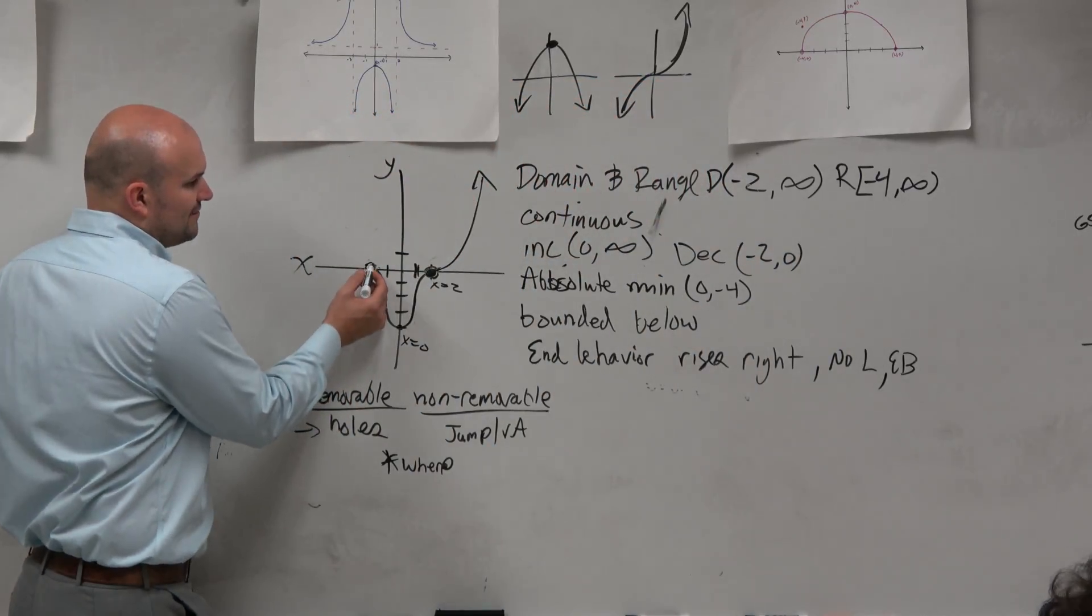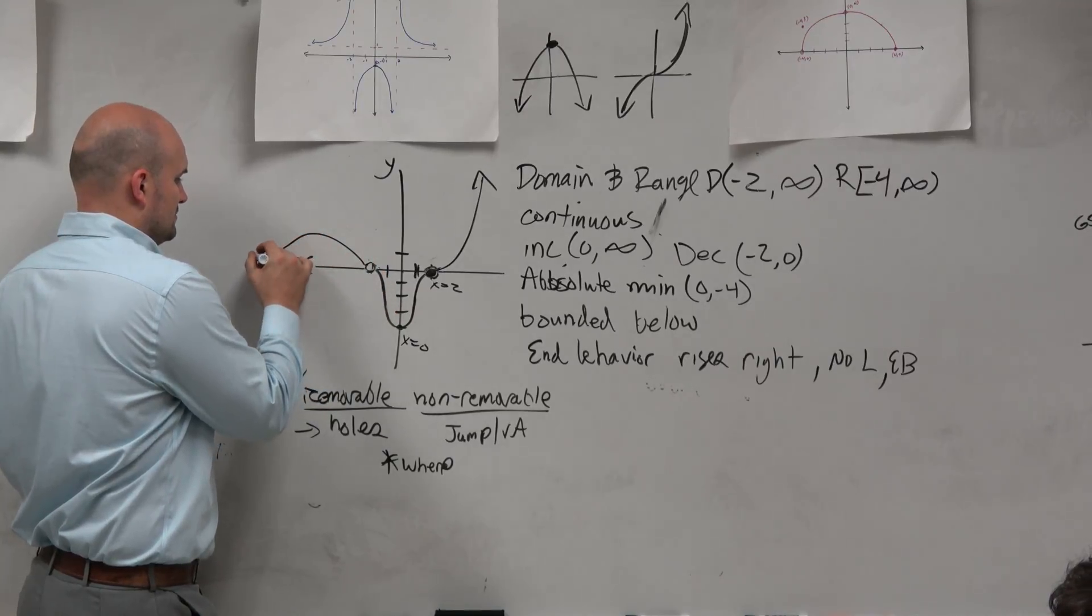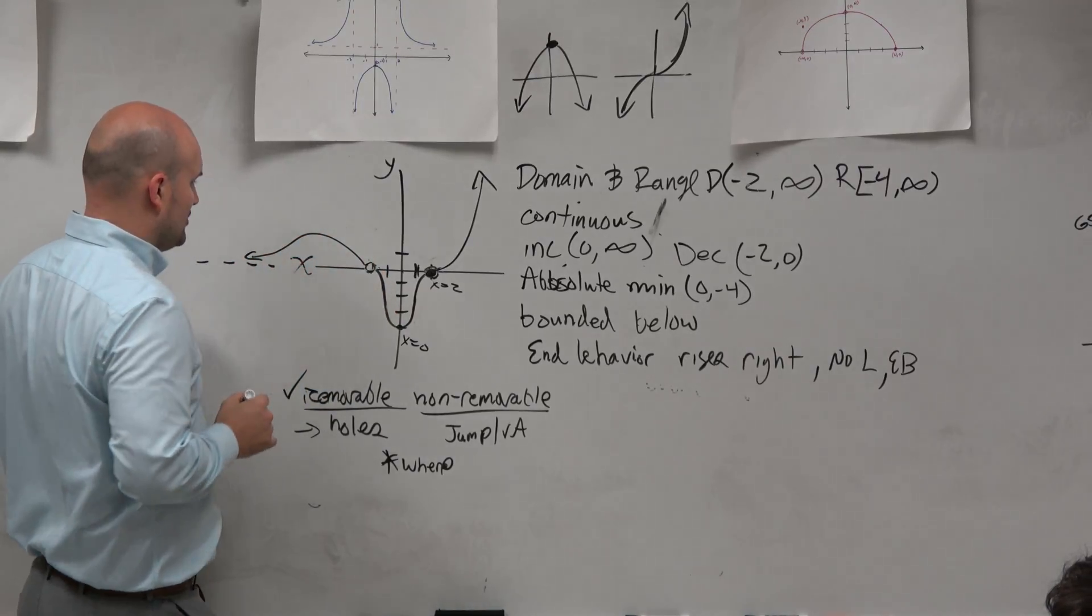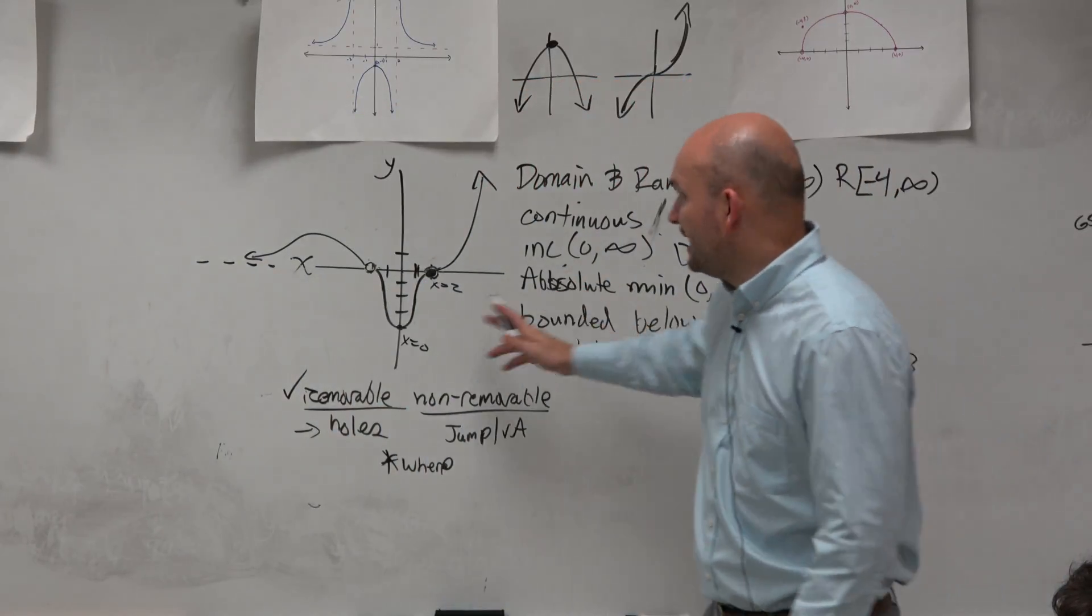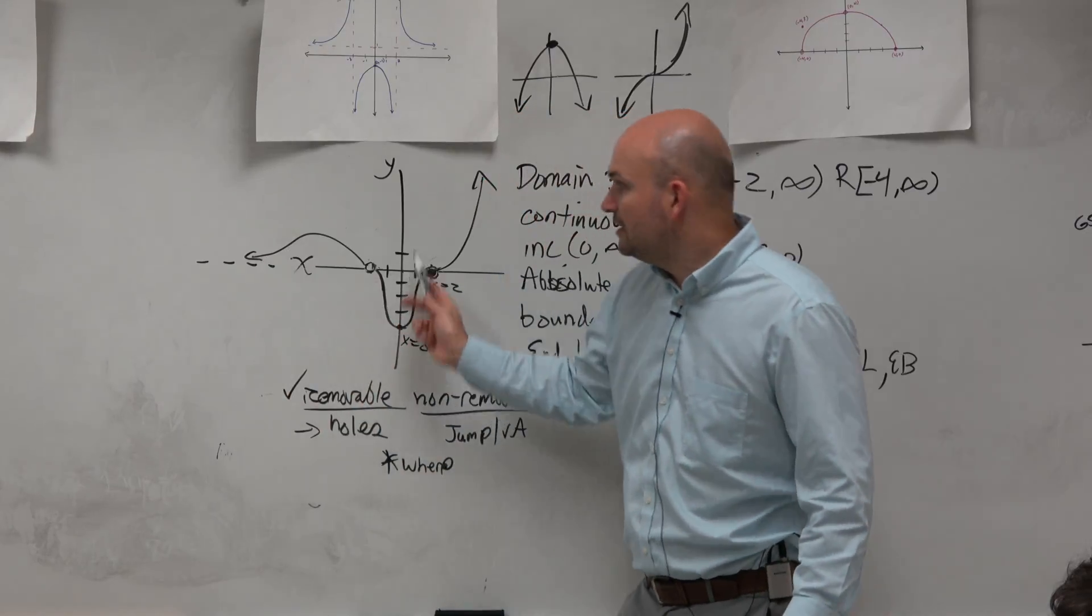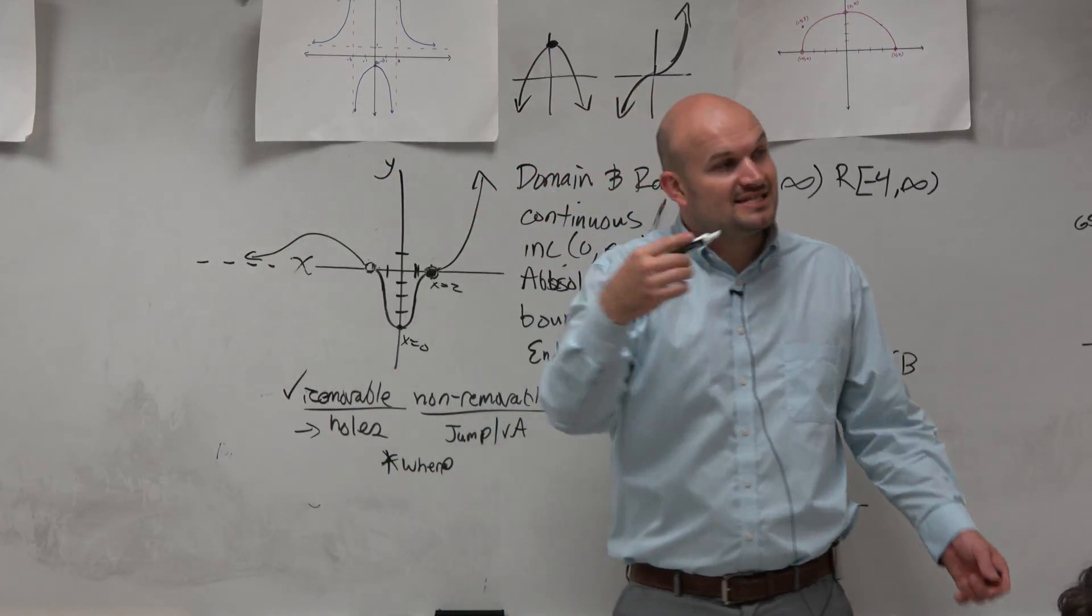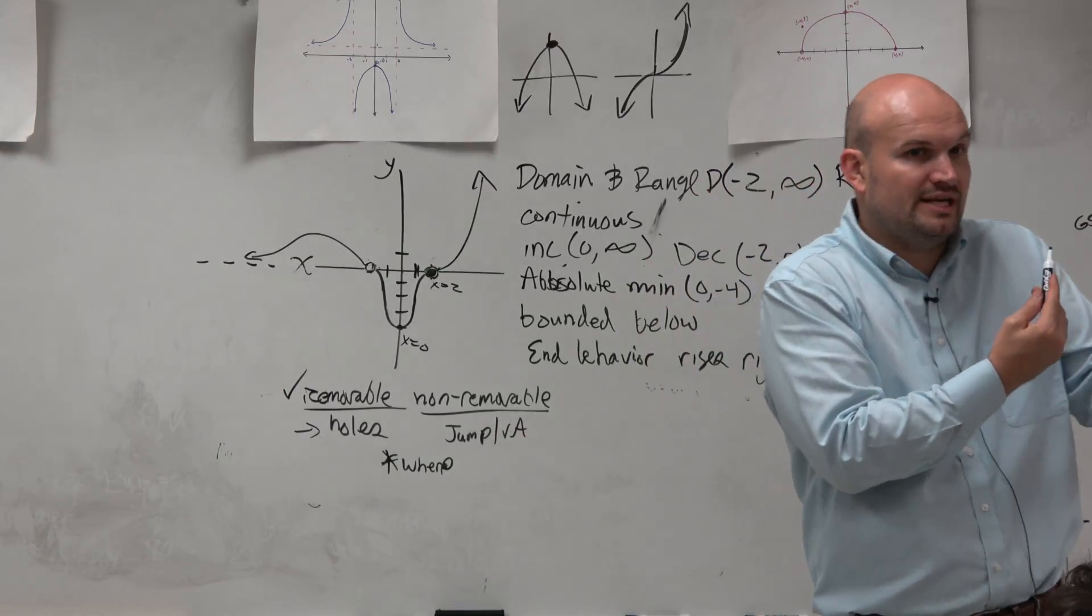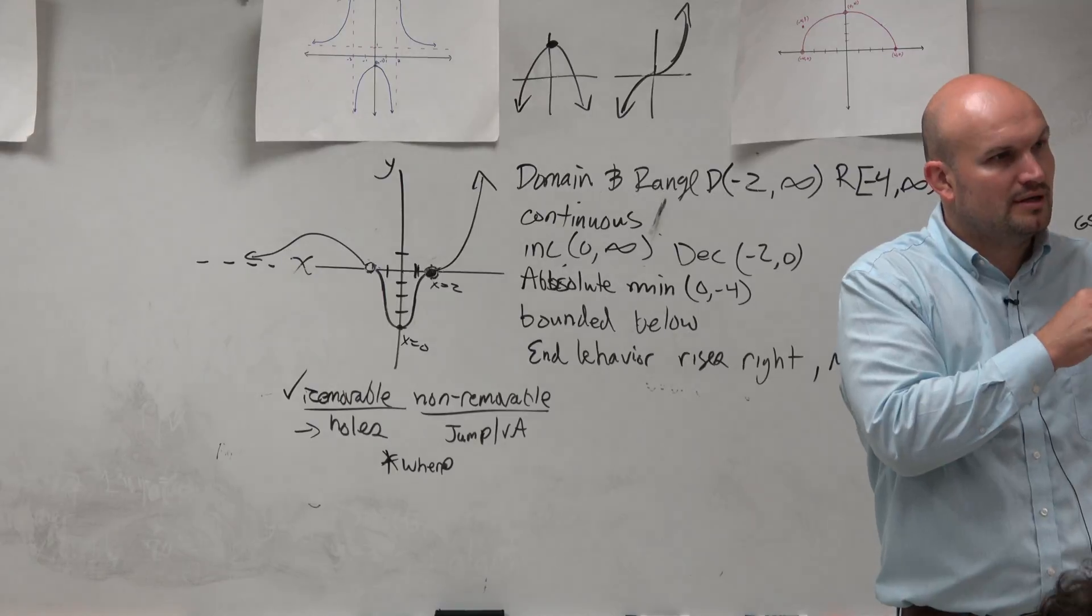Now, what if the graph did something like this and approached like a horizontal asymptote at 0? So instead of it going up to infinity or shooting down to infinity, it approached an asymptote. Well, then you could say as it goes to the left, it's approaching 0 in this case. It's approaching the value of the horizontal asymptote.